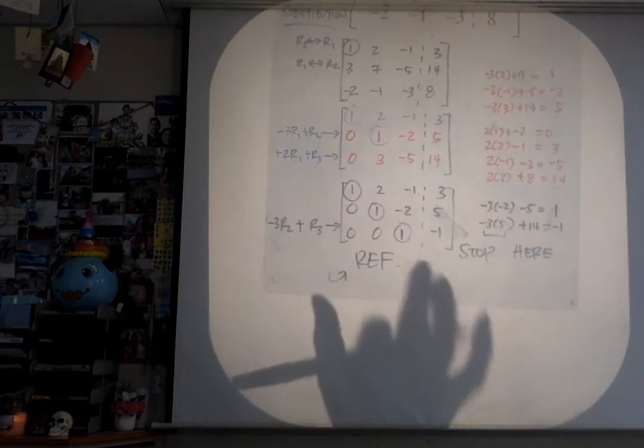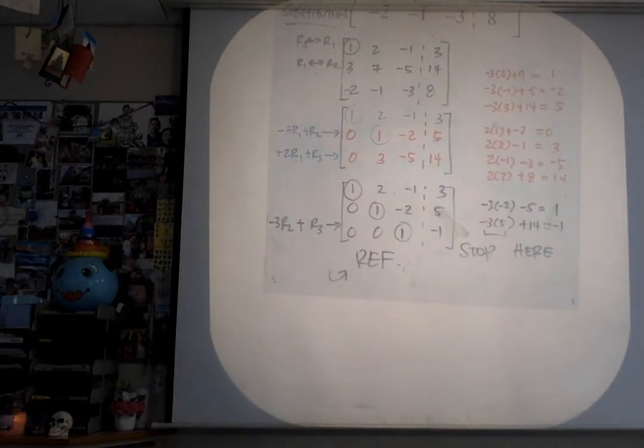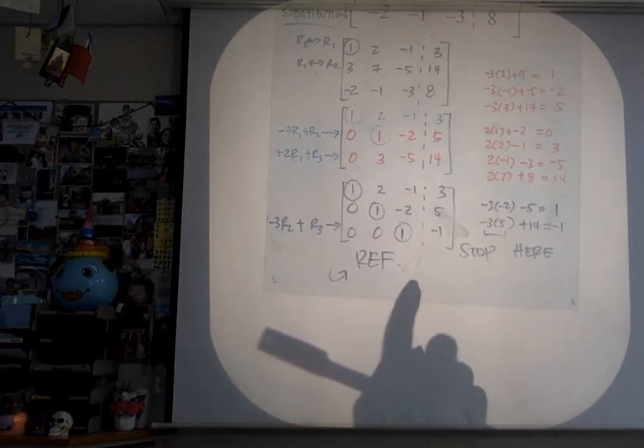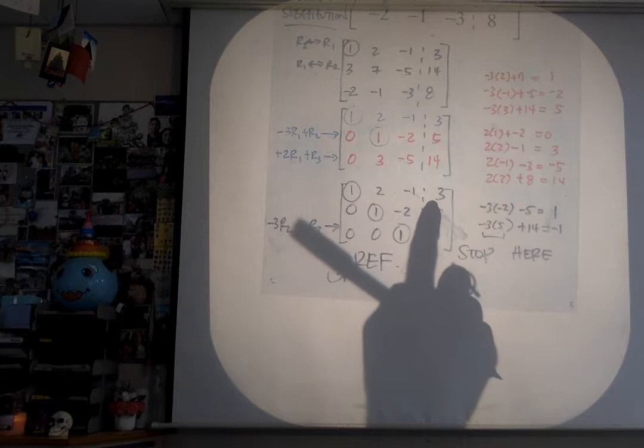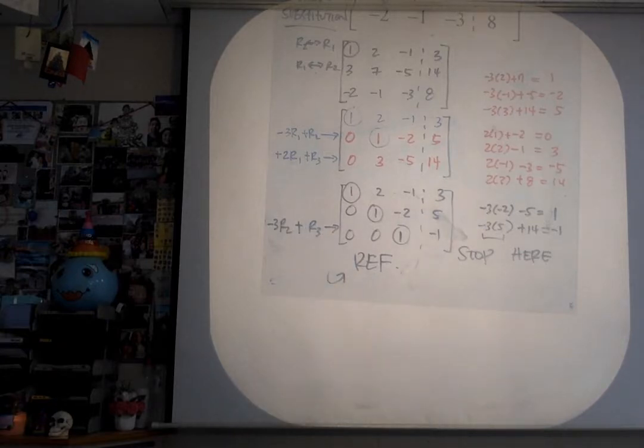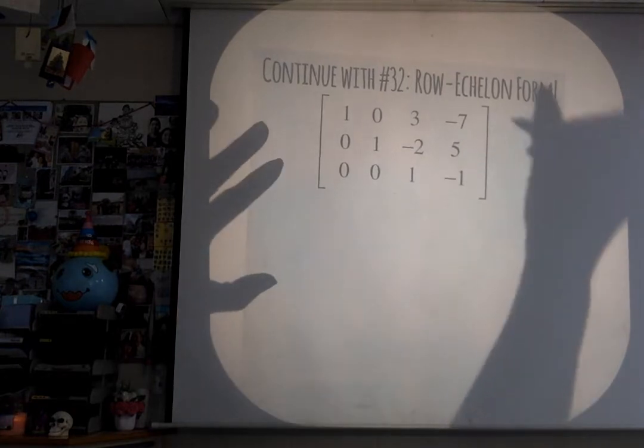We're gonna go back to our old previous example, which was number 32, and we're gonna finish that. Remember how we left it like this? I'll show you the matrix that we were looking at. Remember how we said stop here? We said stop there. I think we stopped here, maybe there was a little error or something.